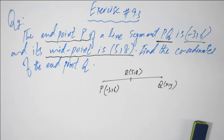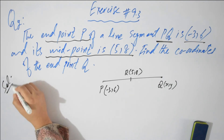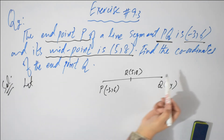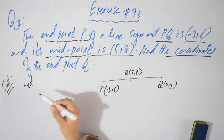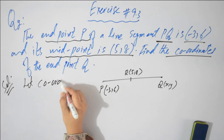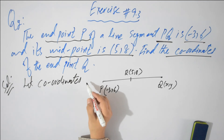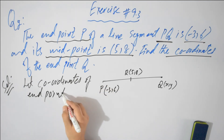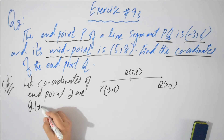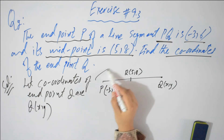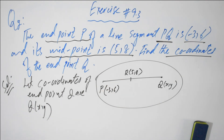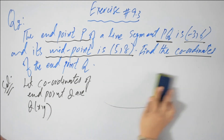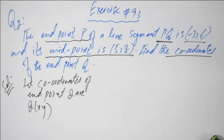We also have to find the coordinates of end point Q — Q of x comma y — you can see the coordinates from this figure. We took the coordinates of end point Q as x comma y. Now, same as we did in the example, we will do it the same way.